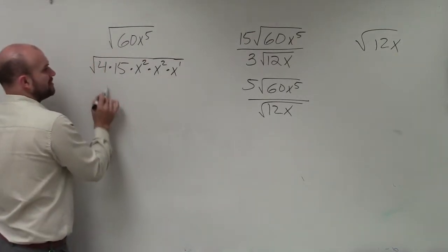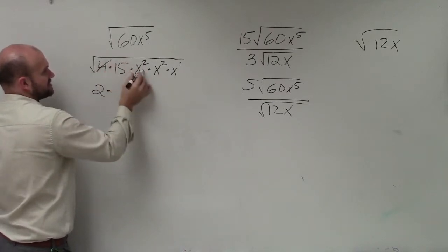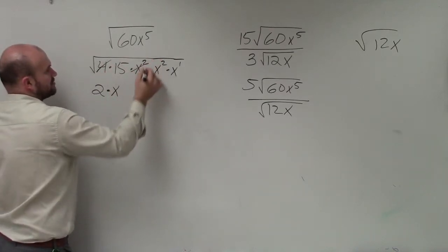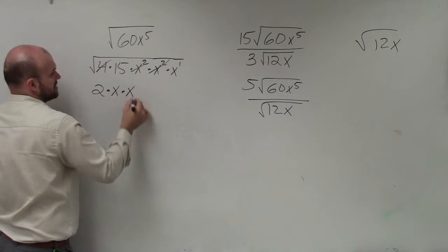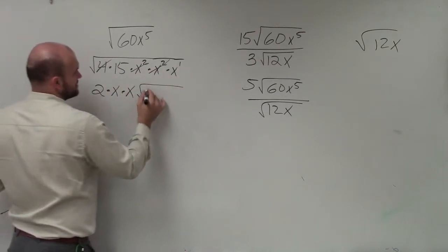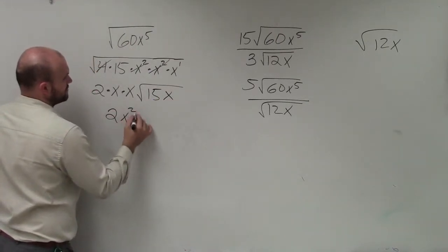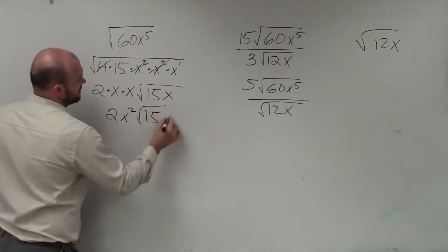Now, to simplify this, remember, the square root of 4 is 2 times the square root of x squared is just x. The square root of x squared is just x. And then, left over, I cannot take the square root of 15, nor can I take the square root of x. So that's just going to leave me with 15x. So therefore, I have 2x squared times the square root of 15x.